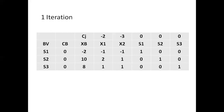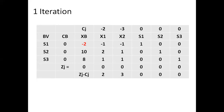We need to check the optimality condition by computing ZJ minus CJ. First, we compute the ZJ values as the summation of CB times each column, from XB through S3. Since all CB values are 0, all ZJ values are 0. Taking the difference ZJ minus CJ, we get: 2, 3, 0, 0, 0. All ZJ minus CJ values are greater than or equal to 0.